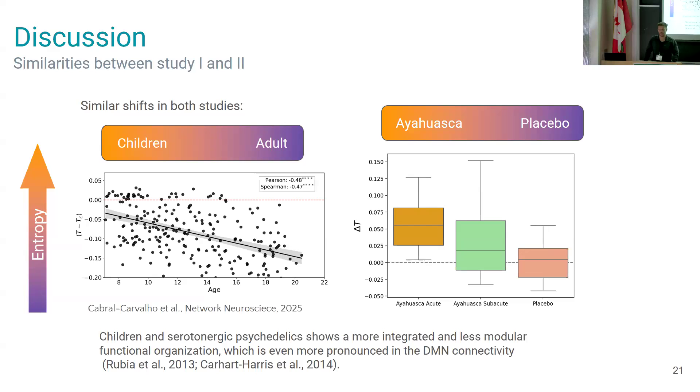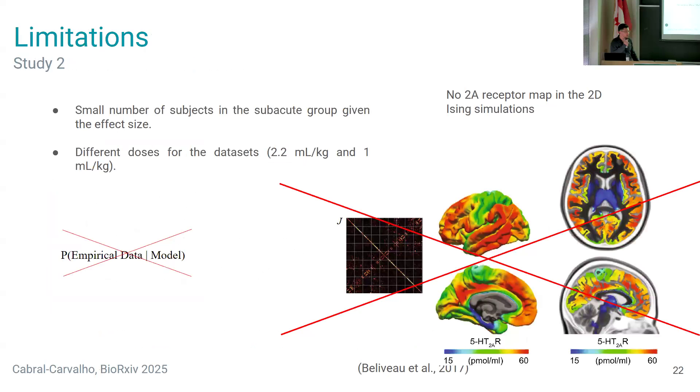But there are several limitations. We don't have any type of probability that the empirical data given the model, so that's really hard to check how good this model is at predicting and explaining our data. Small number of subjects, and of course this model does not consider the geometry of the brain. There is no consideration about the receptors map, so it's very naive models, just capturing these overall dynamics.